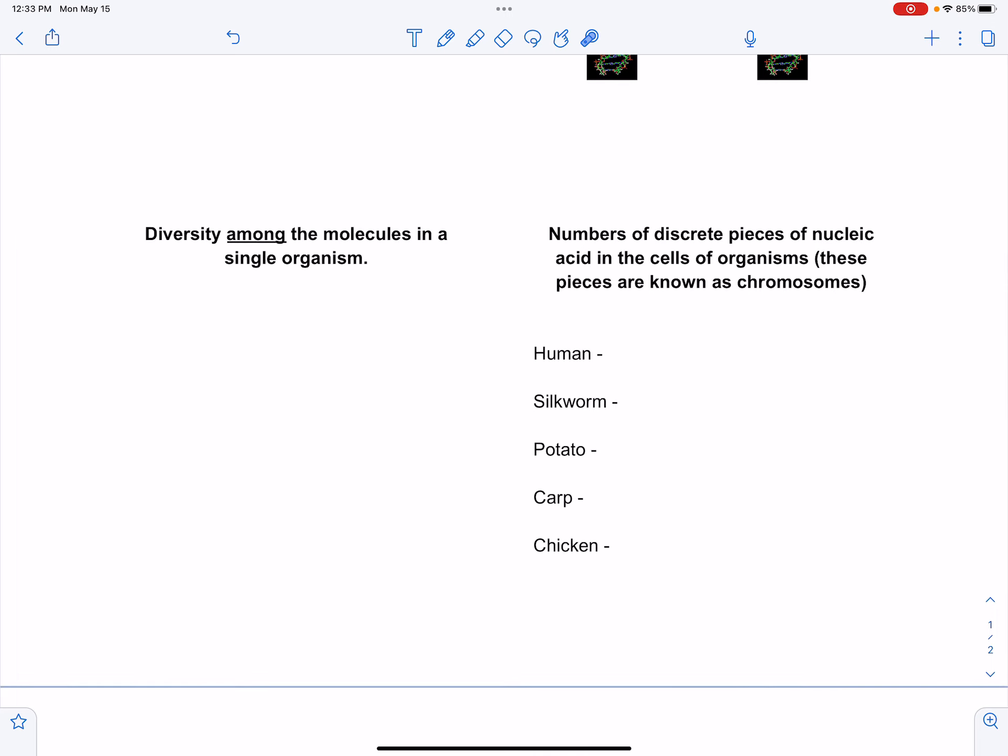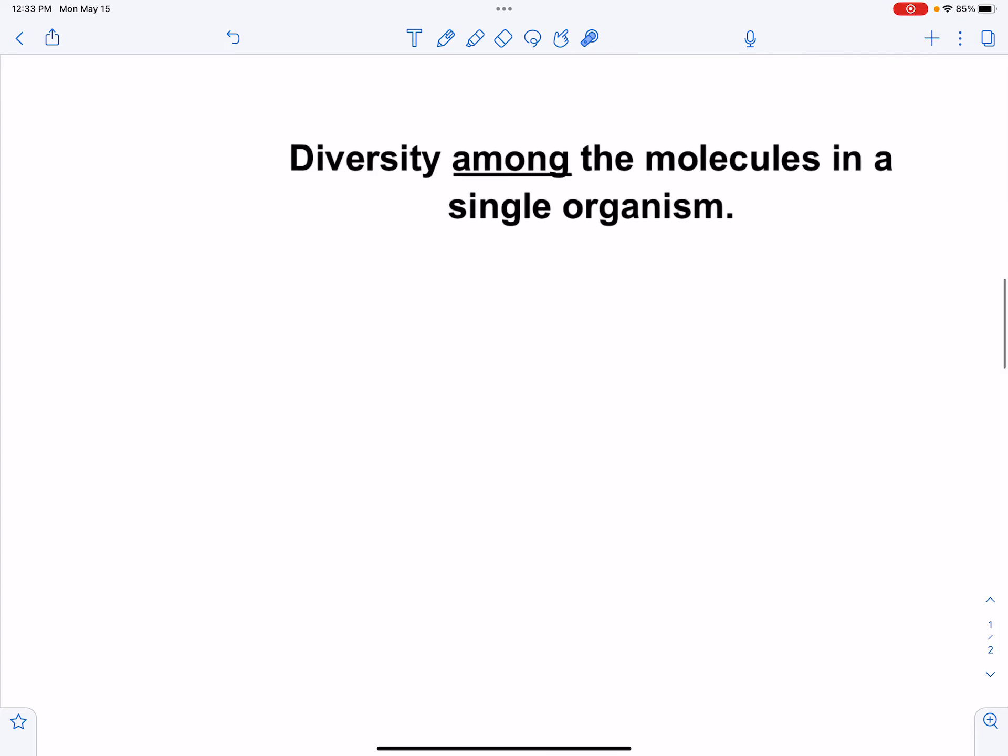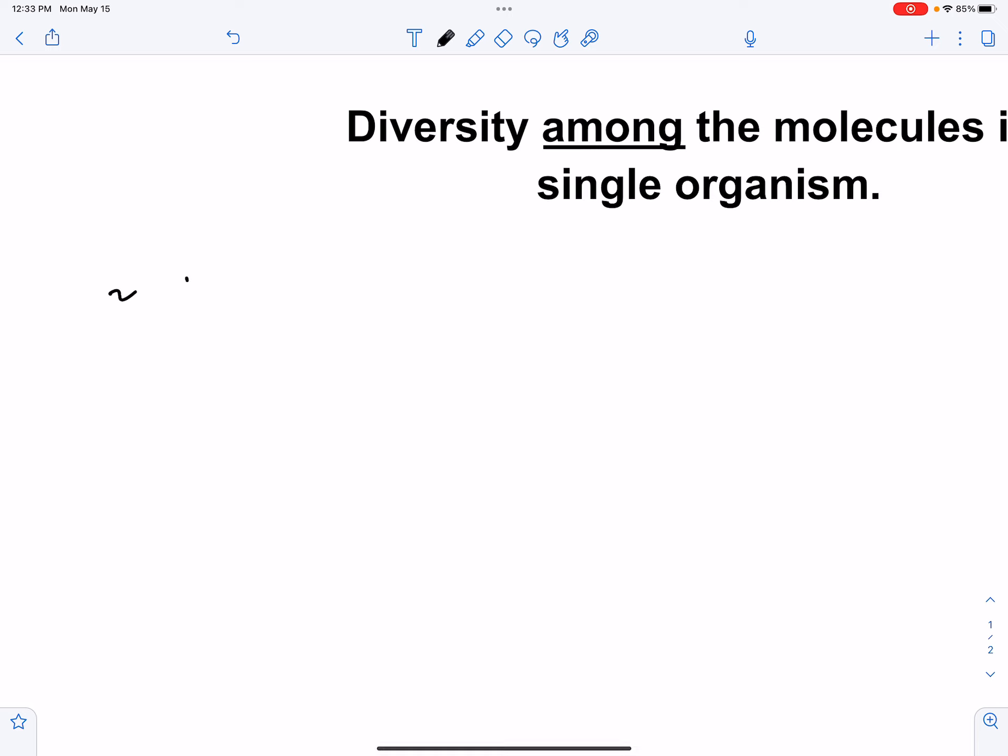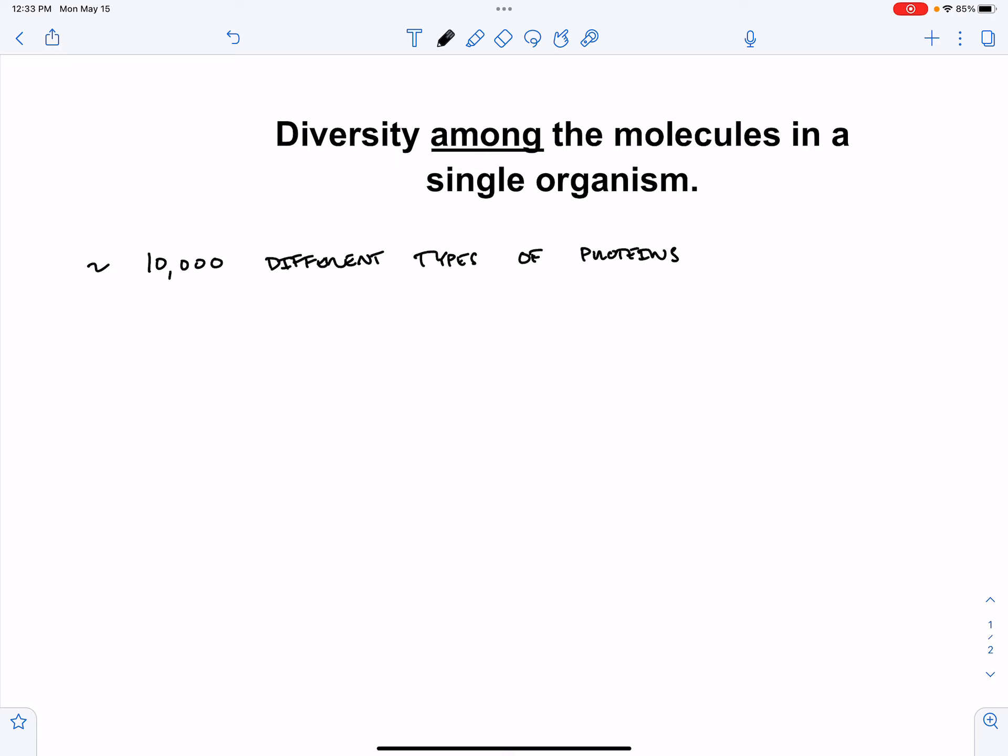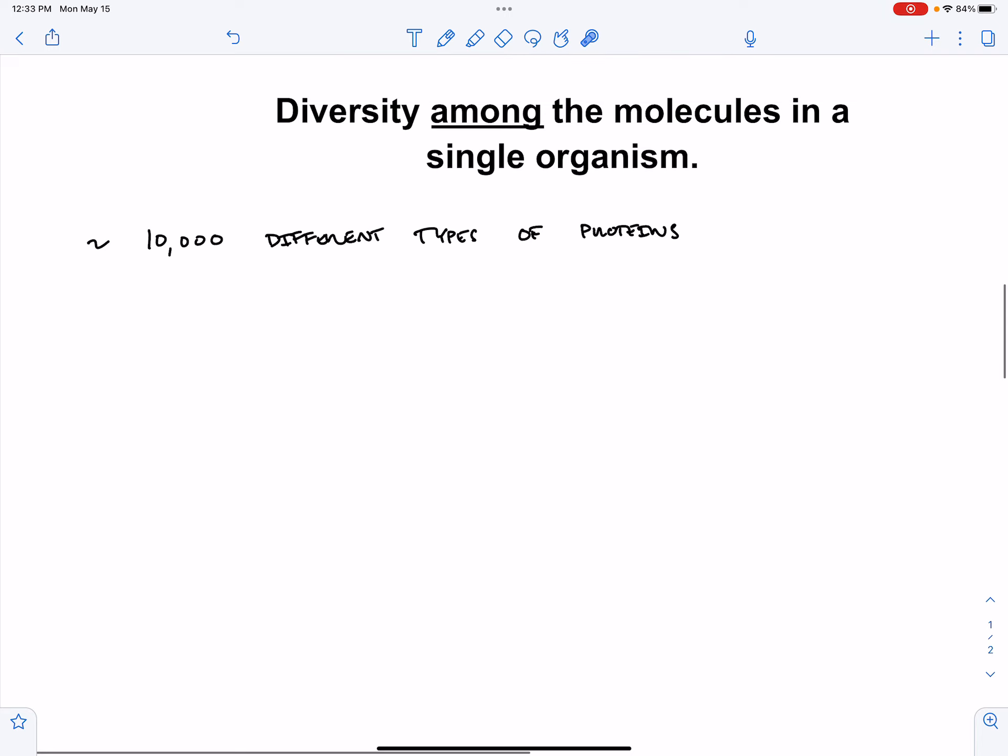If we're talking about diversity among the molecules in a single organism, in humans alone there are about 10,000 different types of proteins in the human body. And in terms of having different roles to play within a cell, if you were to sample all of the different proteins found in the human body you would see more than 10,000, so a ton of different roles of a single type of organic compound within a single organism.